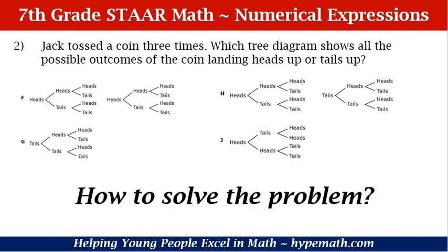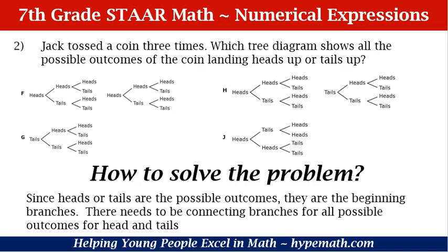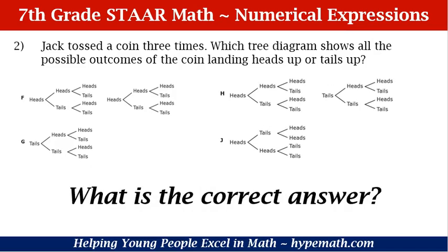How do we solve the problem? Since we have heads or tails as our possible outcomes, they are our beginning branches. Then there need to be connecting branches for all the possible heads or tails outcomes. Think about when you're playing heads or tails. The first time you flip it, it can be heads up or tails up. Then you flip again, and again it can be heads up or tails up, and that's how it continues on.